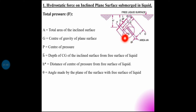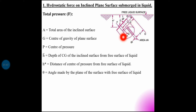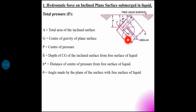Total area A — capital A is the total area of the inclined surface. G is the center of gravity of the plane surface. The center of pressure is the point where the total pressure force acts on the inclined surface.